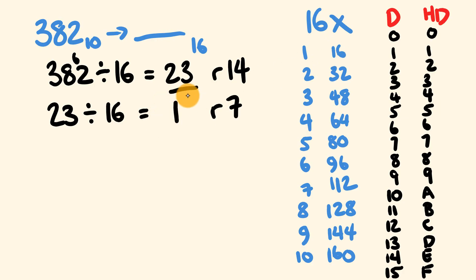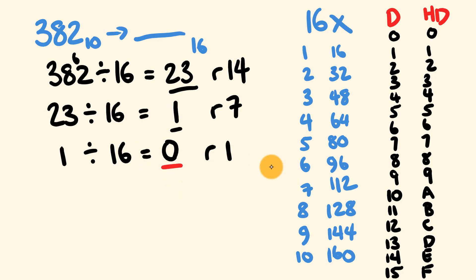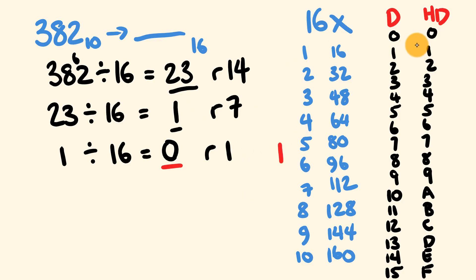We bring down 23 and divide by 16: 23 divided by 16 equals 1 with a remainder of 7. Then we bring down 1 and divide by 16: 1 divided by 16 equals 0 with a remainder of 1. Once we reach 0, we stop and read our remainders.